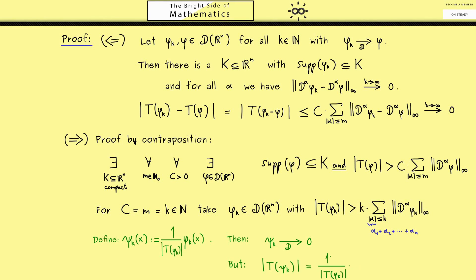To see this, just look at the absolute value of T of psi_k, which is by the linearity just 1 over the absolute value of T of phi_k times the absolute value of T of phi_k. Which is of course always 1.